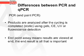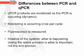Differences between PCR and qPCR. PCR is known as endpoint PCR because the products are analyzed after the cycling is completed, so the quantities are static at that point. It uses gels, capillary electrophoresis, UV, or fluorescence detection. Endpoint assay means results are viewed at the end — the end result is all that is important. With qPCR, products are monitored as the PCR process is occurring, so it is a dynamic system.